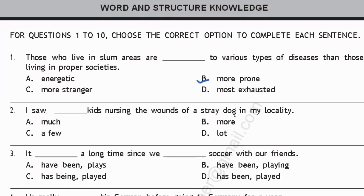Question two: 'I saw dash kids nursing the wounds of a stray dog in my locality.' 'Much' can't be used before a countable noun like 'kids.' 'More kids' implies a large group, which isn't appropriate here. Option C — 'a few kids' — is the correct answer: 'I saw a few kids nursing the wounds of a stray dog in my locality.' 'Lot' without 'a lot of' is also not appropriate, so option C is correct.